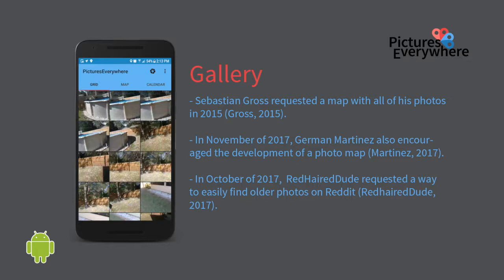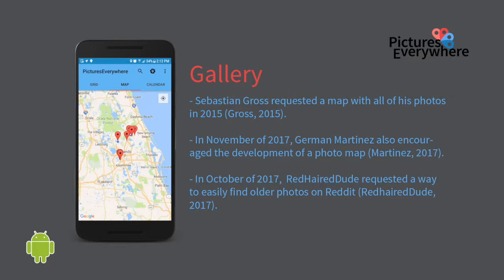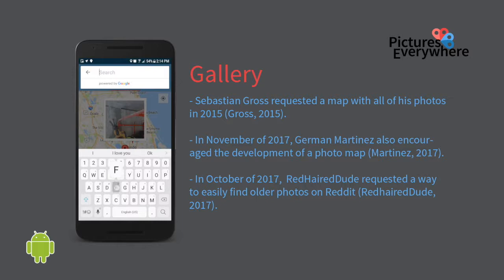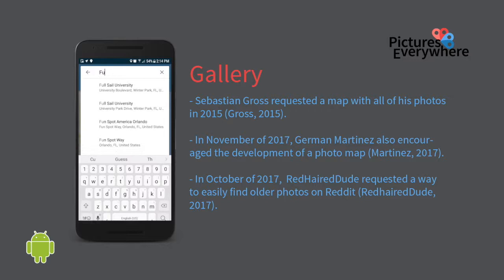Pictures Everywhere is much more than a standard Android Gallery replacement. As Sebastian Gross asked for in 2015, there is a map that shows all of the pictures taken on the device that have geotagged information as map pins with previews that can be clicked to display the photo full screen. The map is also able to be searched. However, the map zoomed to the selected place will be implemented in an upcoming sprint.